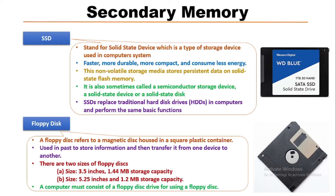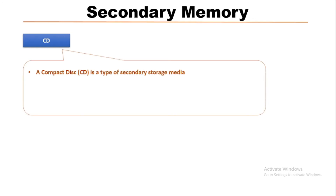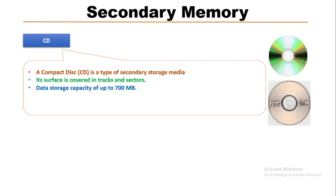Now we will know about the CD. CD stands for Compact Disc, which is a type of secondary storage media. Its surface is covered in tracks and sectors. This is the outlook of a CD surface. Its data storage capacity is up to 700 MB. There are two types of CD: one is CD-R (Compact Disc Read Only) and another is CD-RW (Compact Disc Read Write).